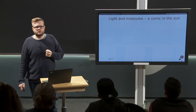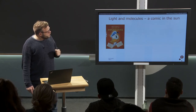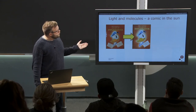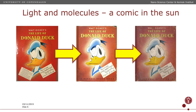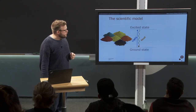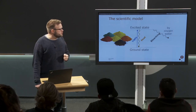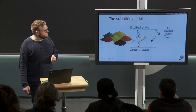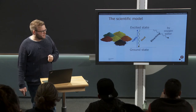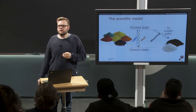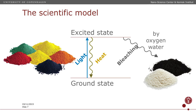But that's not the only thing that can happen. A different process is the one we know if we put a comic book in the windowsill and let it sit in the sun for a while — slowly the color fades. That's because there's a different process that can occur from the excited state. In our scientific model we add another arrow, and that arrow corresponds to bleaching, which is a chemical process that destroys the dye. Typically it's a process involving oxygen and water. Two things can occur: we can either destroy the molecular structure, making the dye colorless, or we can destroy the dye completely, essentially turning it into ash.